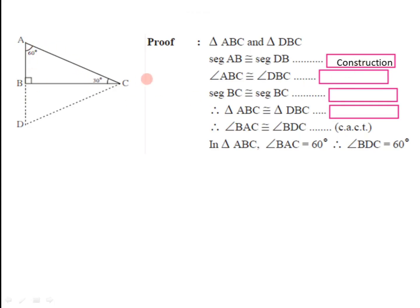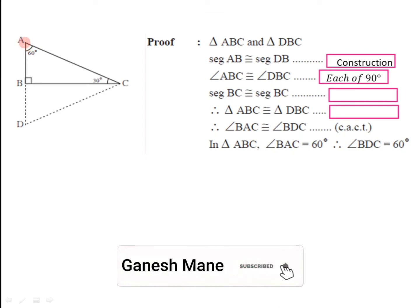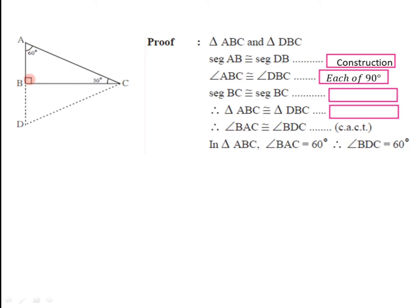Then measure of angle ABC is equal to measure of angle DBC, and each is 90 degree, because it is given that angle ABC is a right angle. Angle ABC and angle DBC are angles in a linear pair. So if one of the angles in a linear pair is a right angle, then the other must also be a right angle. That's why these two angles are congruent because both have measures of 90 degree.